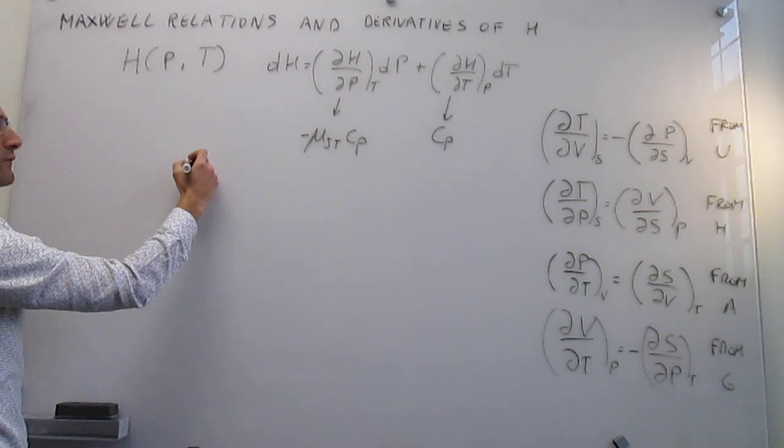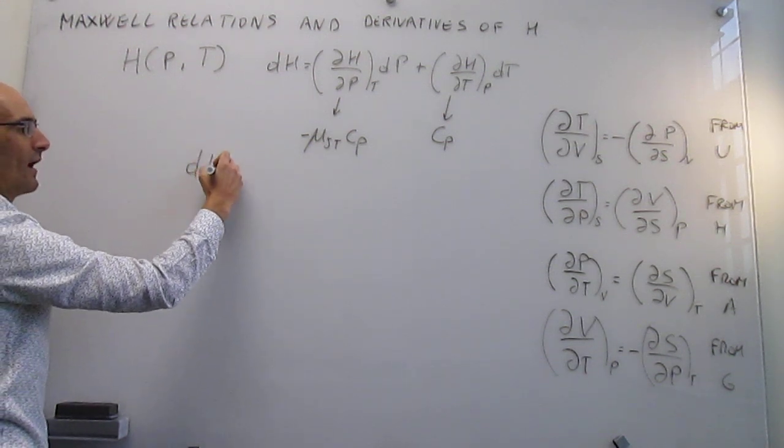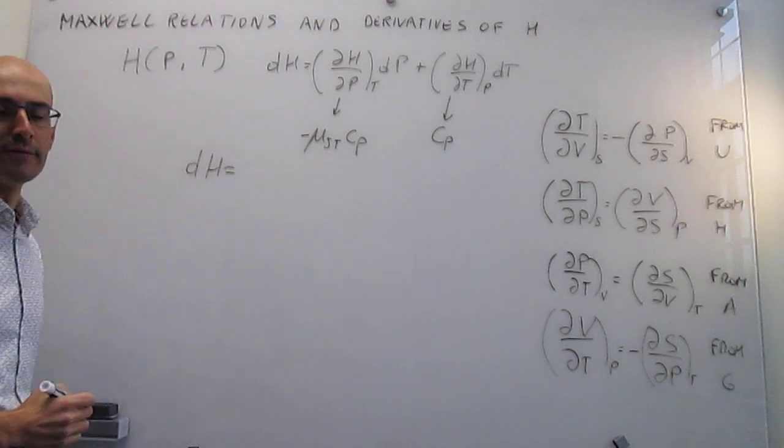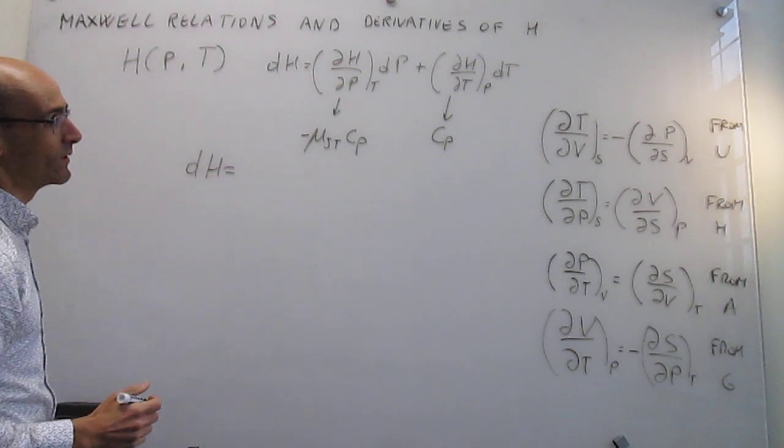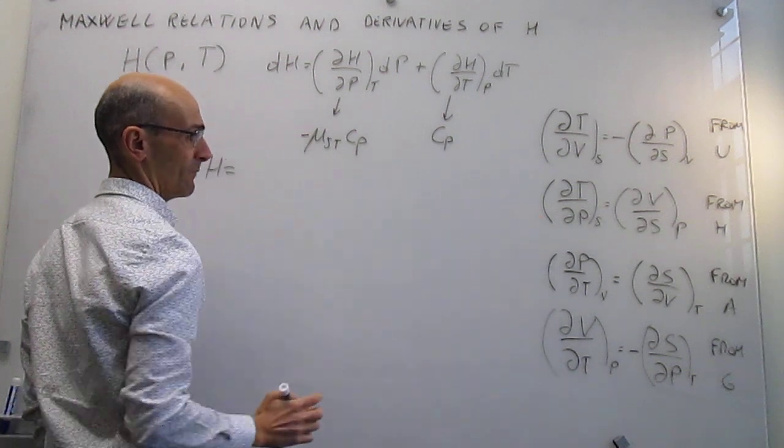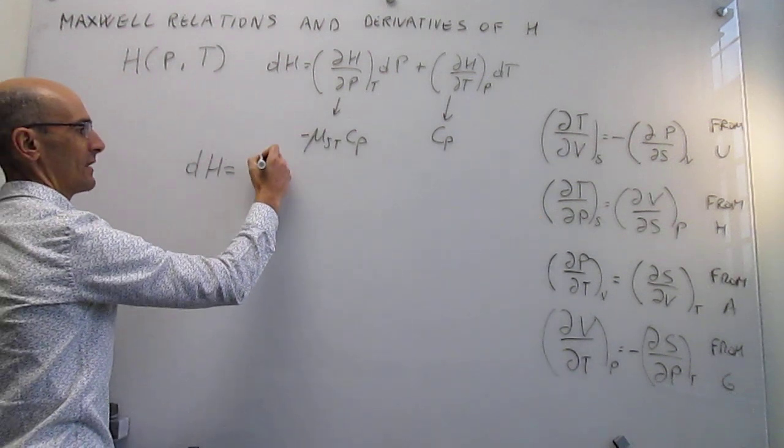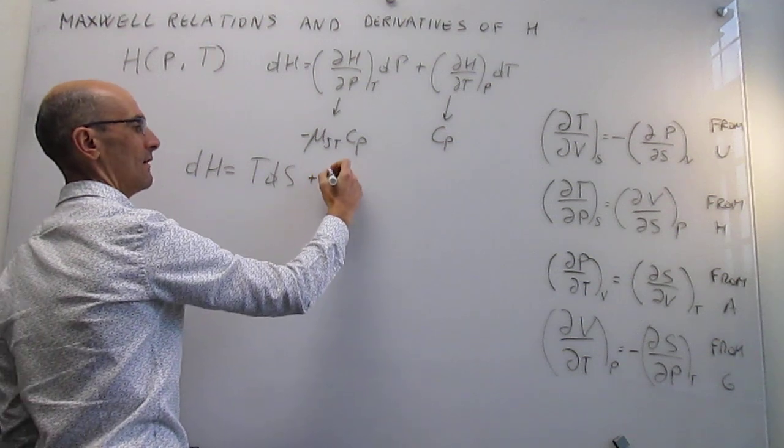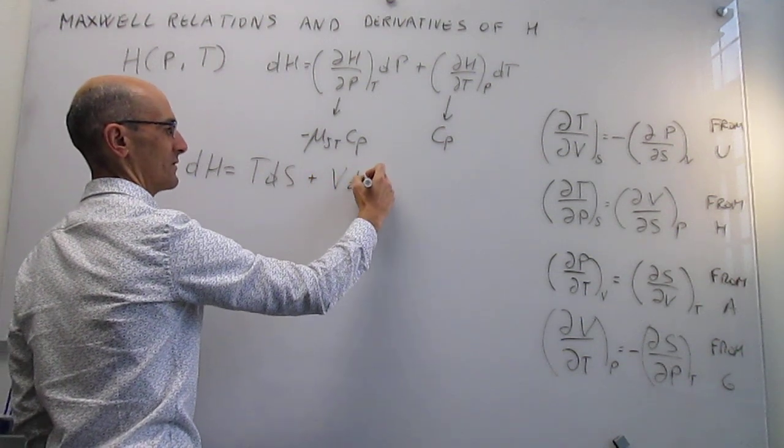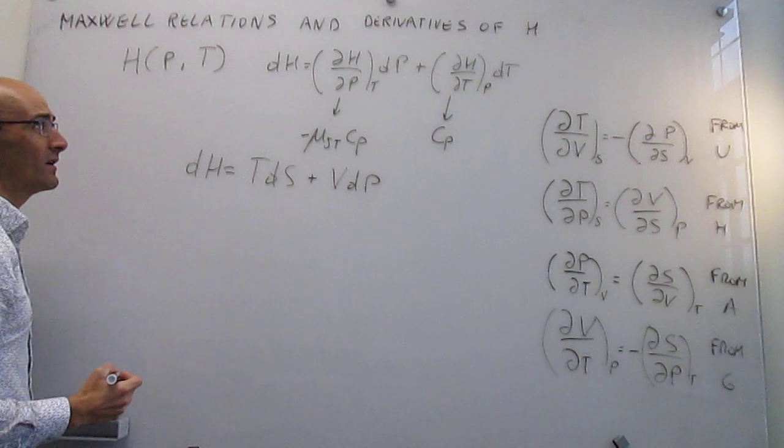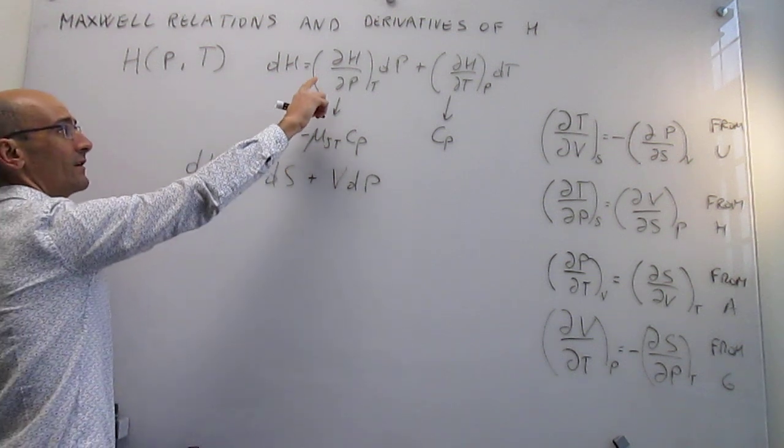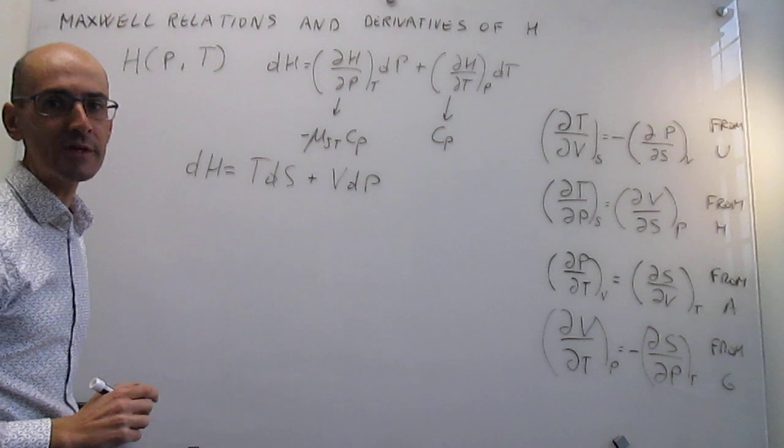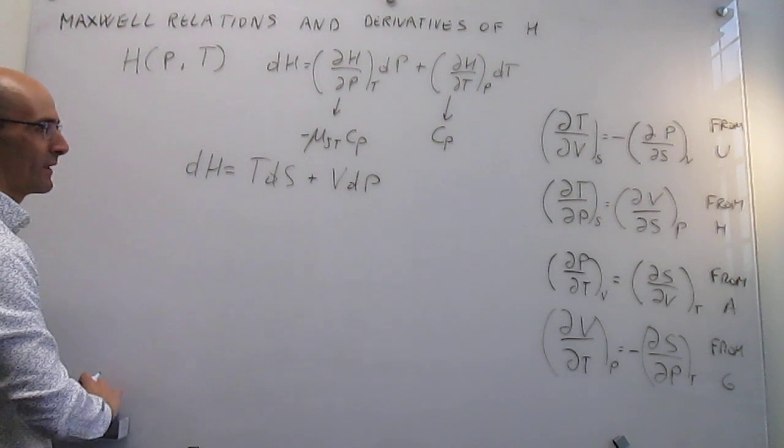We begin with the fundamental equation for enthalpy that we derived in the Maxwell relation for enthalpy: dH = T dS + V dP. That's our starting point, and again our goal is to find out how the enthalpy varies with pressure at constant temperature.